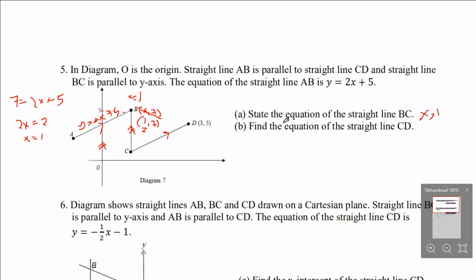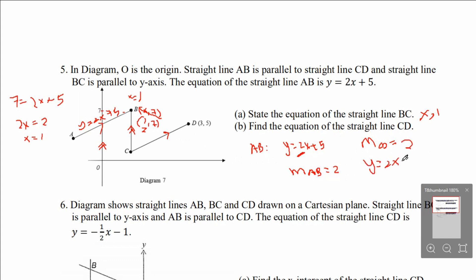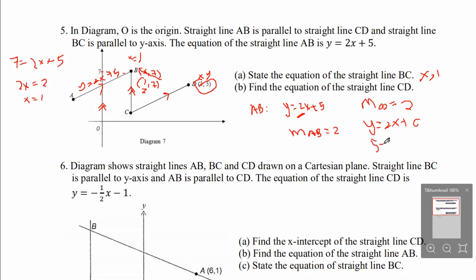Part B: find the equation of straight line CD. AB is parallel to CD. From Y equals to 2X plus 5, the gradient of AB equals to 2, so gradient of CD equals to 2 also. For CD: Y equals to 2X plus C. Substituting the given coordinate (3, 5): 5 equals to 2 times 3 plus C, so C equals to 5 minus 6 equals to negative 1. The equation is Y equals to 2X minus 1.